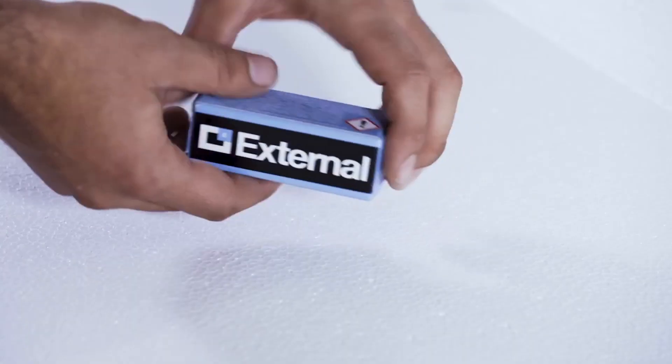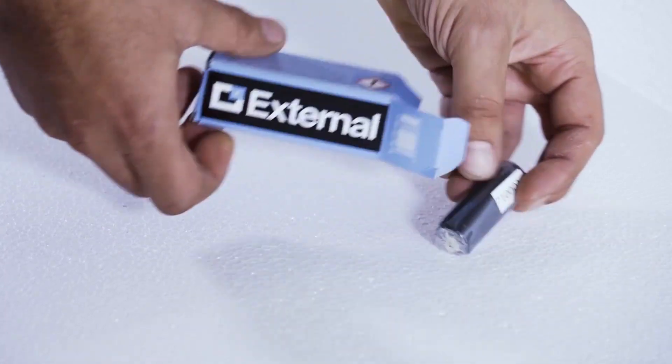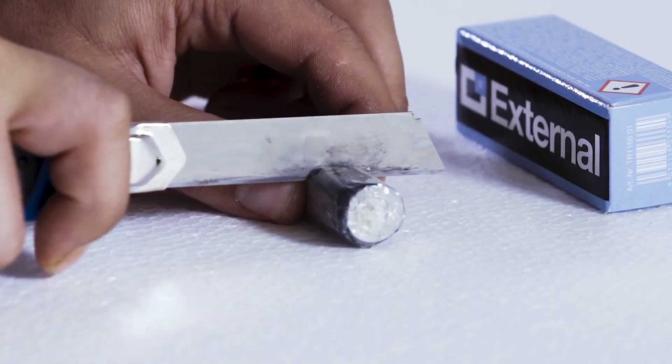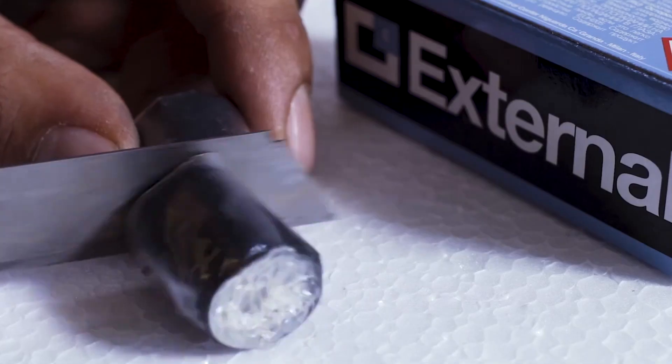Let's go through this step by step. External comes in a roll that will work for three or four applications. Cut the external and save the rest for future use.